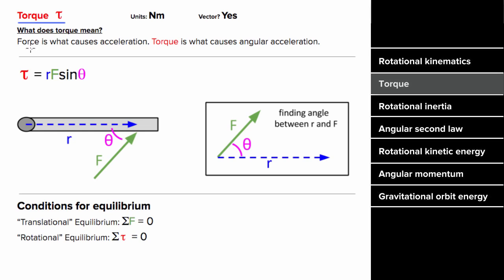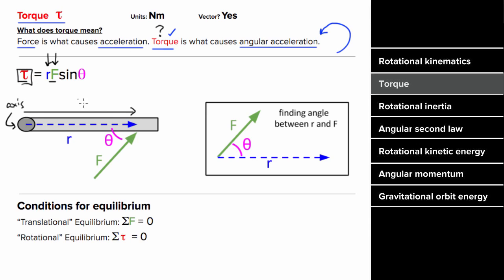What does torque mean? Just like force causes acceleration, torque is what causes angular acceleration. So in order for an object to speed up or slow down in its angular motion, there must be a net torque on the object. Forces cause torque — the same force could exert a different torque depending on where it is applied. If the force is exerted far from the axis of rotation, you get more torque compared to forces applied near the axis. This R represents how far that force is applied from the axis.